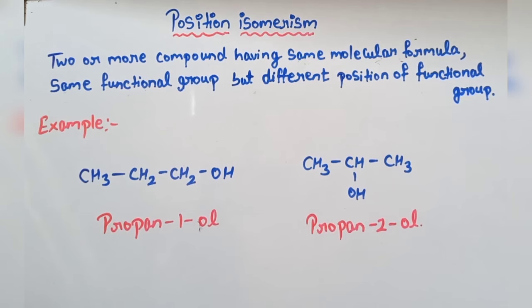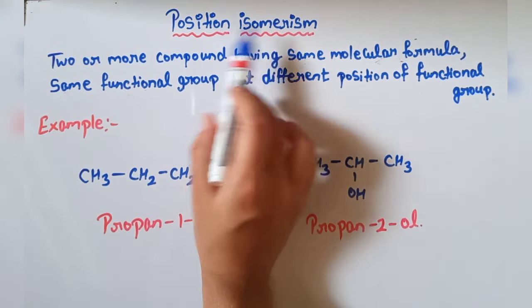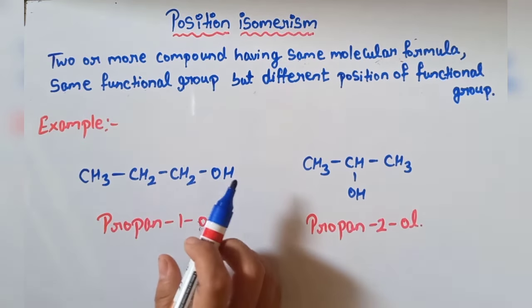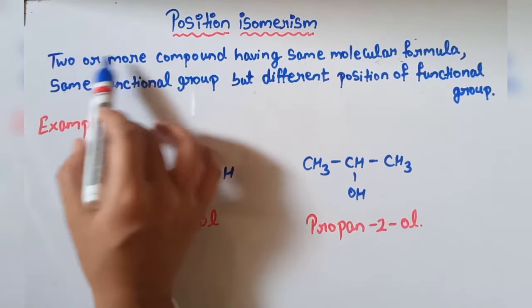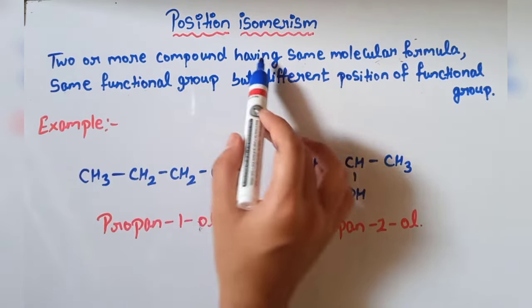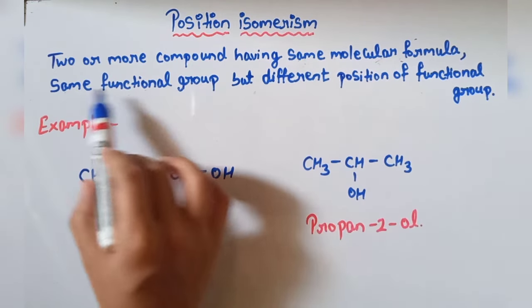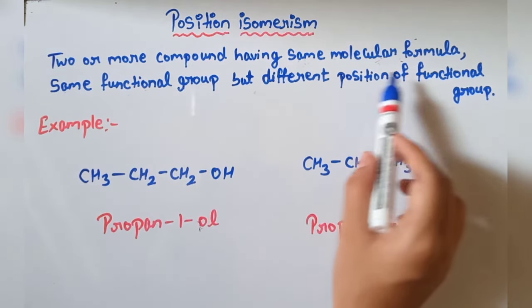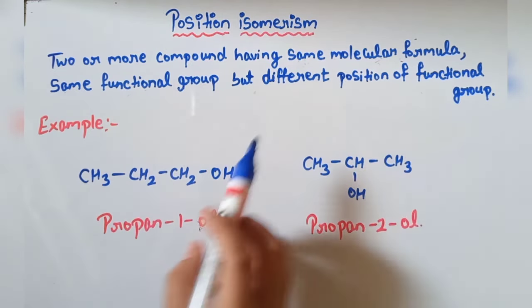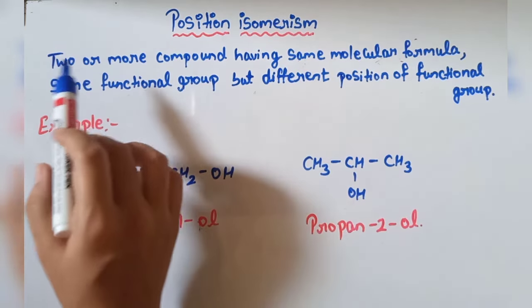Now see the next type, that is position isomerism. Definition: two or more compounds having the same molecular formula and the same functional group but a different position of the functional group.